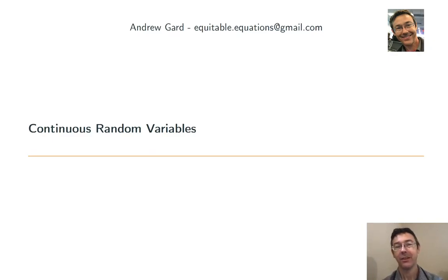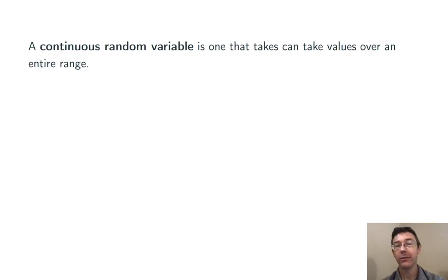Hey everybody. Today we're talking about continuous random variables. A continuous random variable is just a random variable that can take values over an entire range.